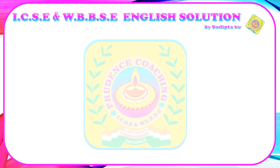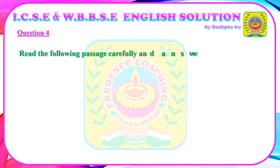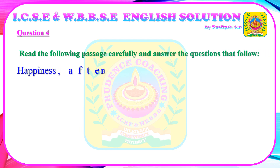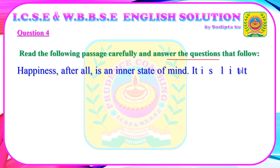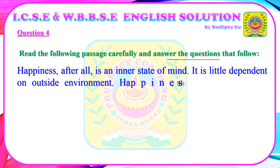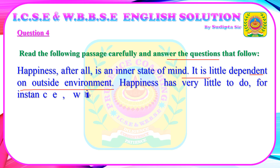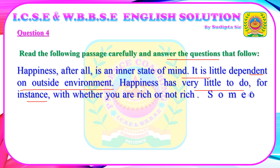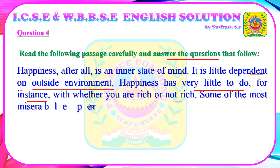Question 4 is about comprehension writing. An unknown passage will be given and you need to answer questions after reading it carefully. The passage is about happiness. Happiness, after all, is an inner state of mind — it is a feeling that comes from our heart. It is little dependent on the outside environment. Happiness has very little to do, for instance, with whether you are rich or not.